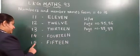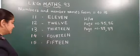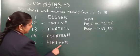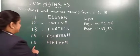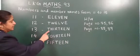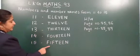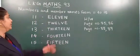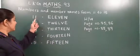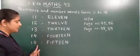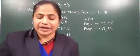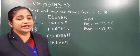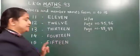Now the last number is one five — fifteen. The spelling: F, I, F, T, E, E, N. Fifteen. Eleven, twelve, thirteen, fourteen, fifteen. These are the exercises of numbers and their number names from eleven to fifteen. Now these spellings you have to learn — number names from one to fifteen.